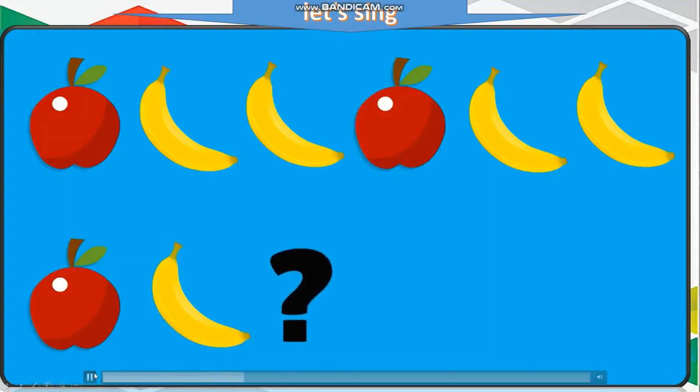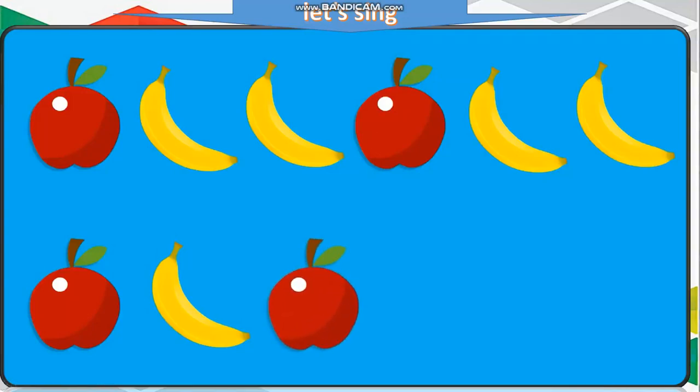What comes next? What comes next here? Yes, I hear you, banana. So I can make a pattern by fruits. Is it an apple? No. Is it a banana? Yes.